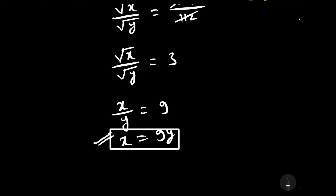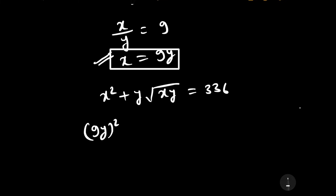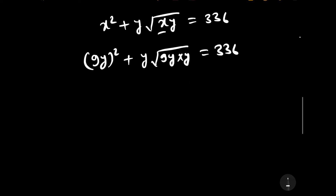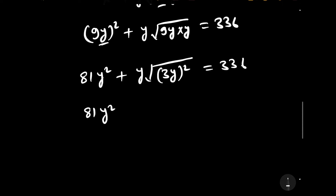Let us substitute this relation into the first equation: x squared plus y times the square root of xy equals 336. Replacing x with 9y gives (9y)² plus y times the square root of 9y times y equals 336. Simplifying: 81y squared plus y times 3y equals 336, which gives 81y squared plus 3y squared equals 336.